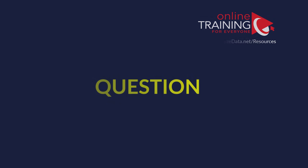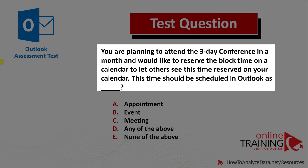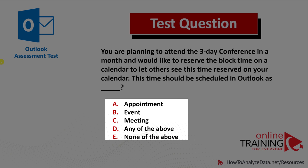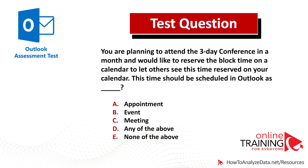Let's look at an interesting but tricky question you frequently see on the test. You are planning to attend a three-day conference in a month and would like to reserve a time block on your calendar to let others see this time reserved. This time should be scheduled in Outlook as: Appointment, Event, Meeting, Any of the Above, or None of the Above. Do you think you know the answer? Let's see how we can get to the correct solution together.